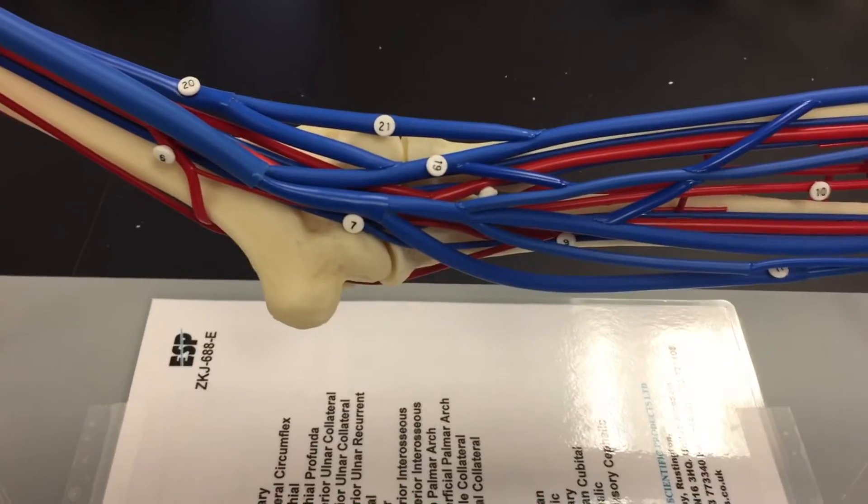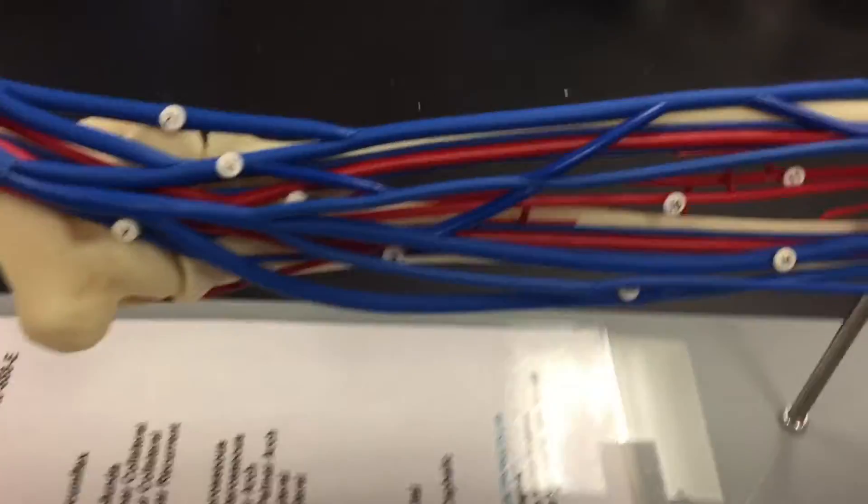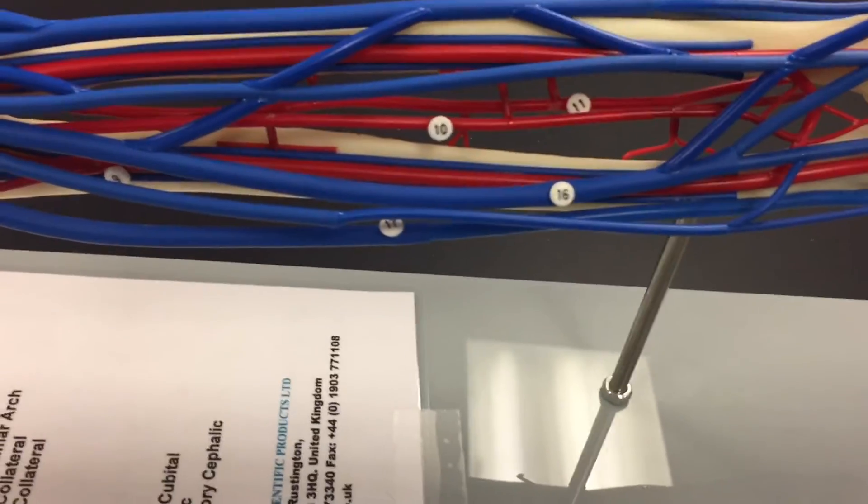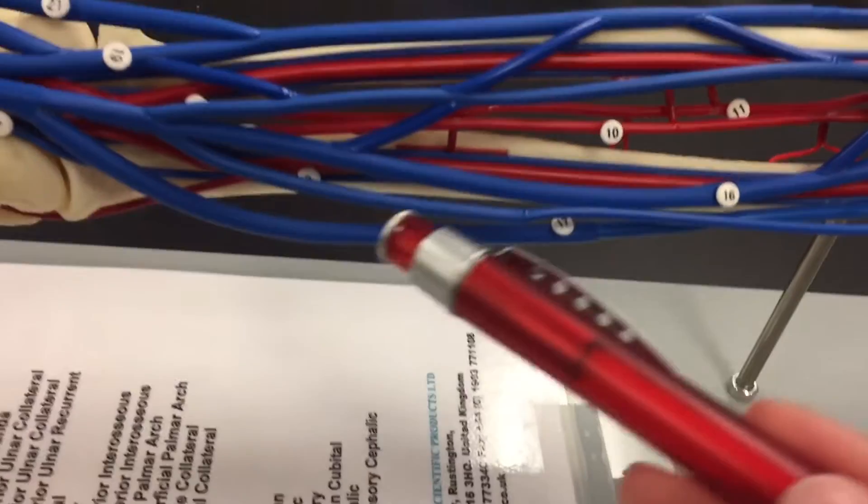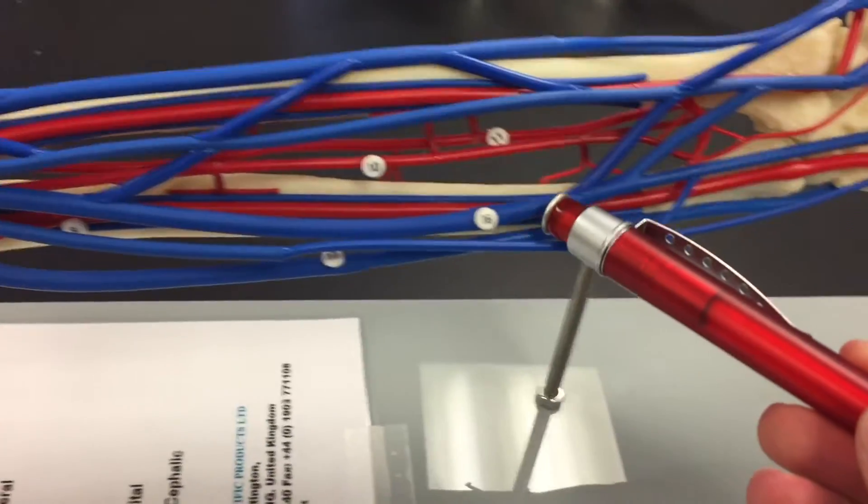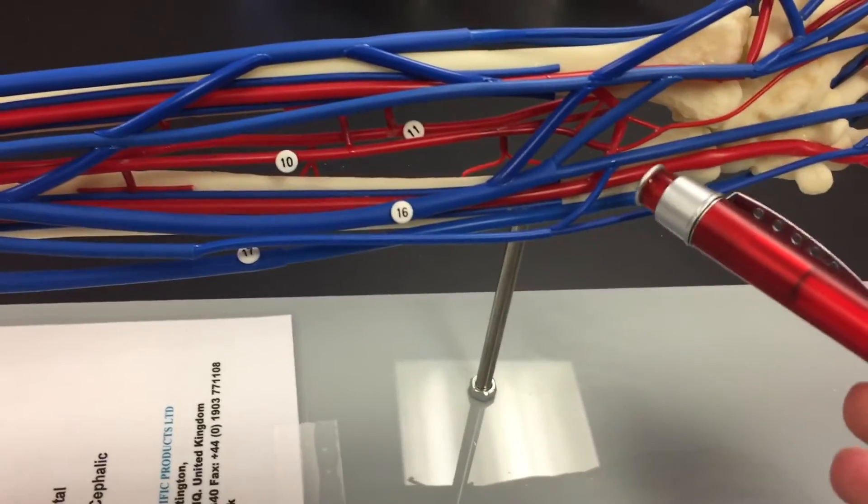And then keep going. We have number sixteen here. This is the median antebrachial vein.